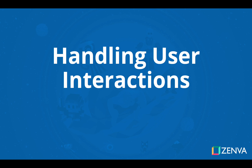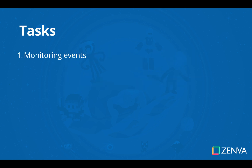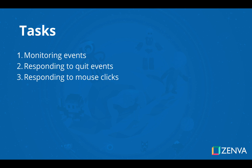Hey everyone, welcome to our tutorial on handling user interactions. Here we're going to explore a couple of the user interactions that we'll be using in our game, how to detect them, and how to respond to them. Our tasks are going to be to first learn about how to monitor events, then we'll respond to quit events, then we'll respond to mouse clicks, and finally to button presses. Let's head to the code and get started.